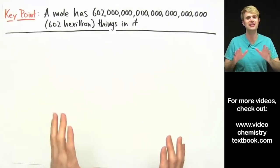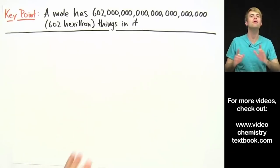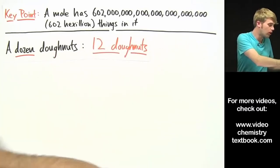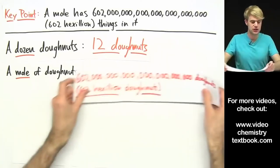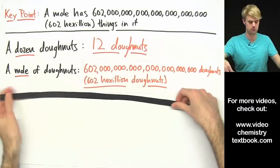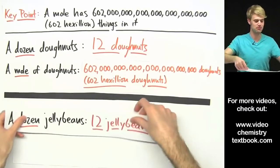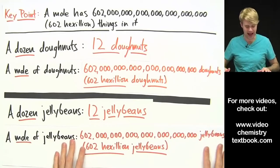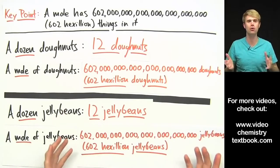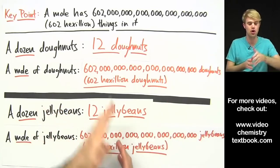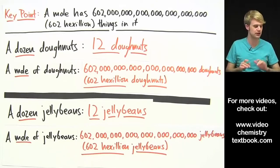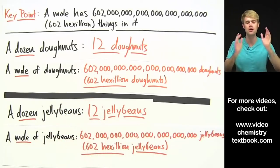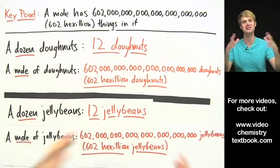Just like a dozen, we can have a mole of anything. We could have a dozen donuts — 12 donuts — or a mole of donuts — 602 hexillion donuts. We could have a dozen jelly beans or a mole of jelly beans: 602 hexillion jelly beans. So sometimes people get freaked out about moles, but just remember they're a lot like a dozen. You can have a mole of donuts, jelly beans, cars, paper clips, or bouncy balls — just as long as it is 602 hexillion things, you've got a mole.